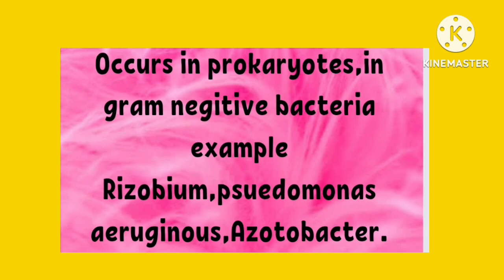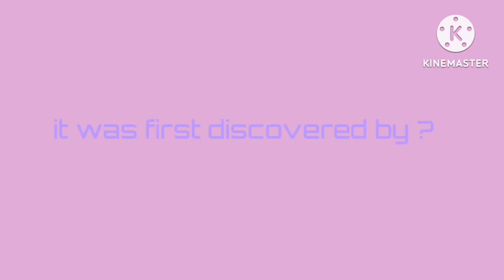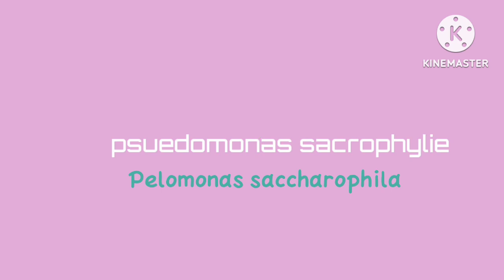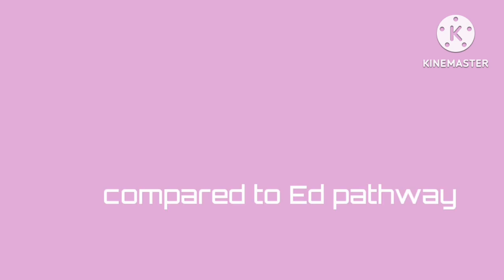It was first discovered in 1952, and Doudoroff first reported the ED pathway in the bacterium Pseudomonas saccharophila in 1954. The ED pathway is an alternative to the EMP pathway, which requires more ATP.